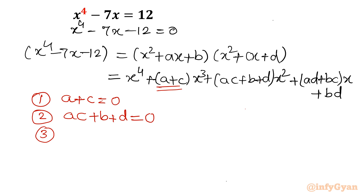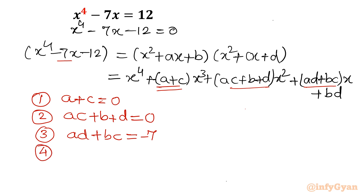Now for the coefficient of x: ad + bc = -7, because the left-hand side has coefficient -7 for x. Similarly, from the constant term, equation 4 gives bd = -12.